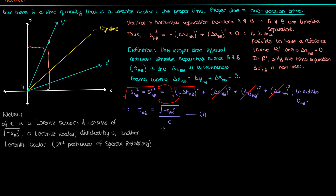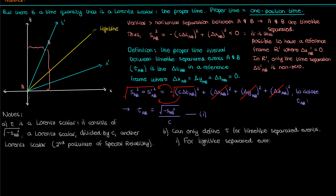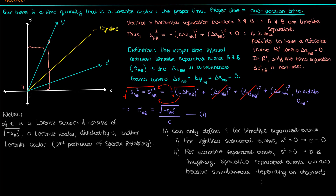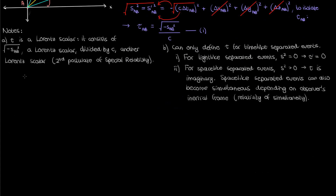The second thing to note is that proper time only makes sense for time-like separated events. For light-like separated events, s squared is zero, so by equation 1 the proper time is also zero. For space-like separated events, s squared is positive; taking the negative and then the square root yields an imaginary proper time, which is physically meaningless. Additionally, space-like separated events can appear simultaneous in some reference frame — that's the relativity of simultaneity — so it makes no sense to assign a proper time to them.